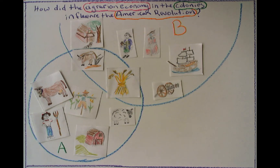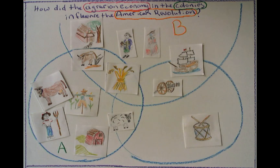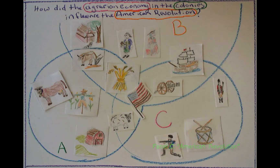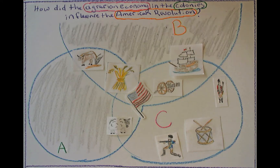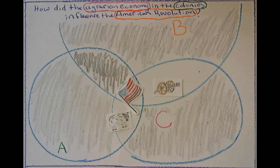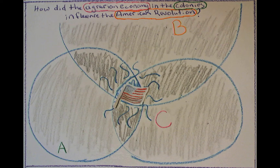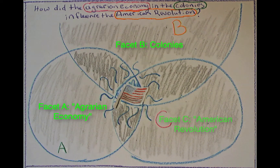A third big idea is American Revolution. We'll draw a third circle around this portion of the database and label it Facet C, American Revolution, and populate the circle with sources representing the American Revolution. We aren't interested in the portions of the database where only one or two facets are discussed. We want the portion where all three circles overlap — where sources discuss all three concepts: agrarian economy, colonies, and American Revolution. This portion has the greatest promise for retrieving sources that answer the user's query.